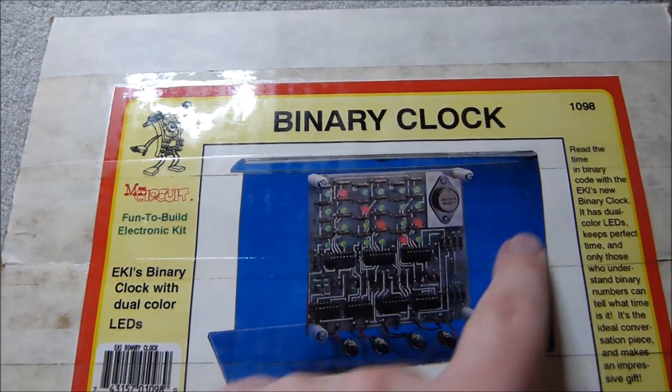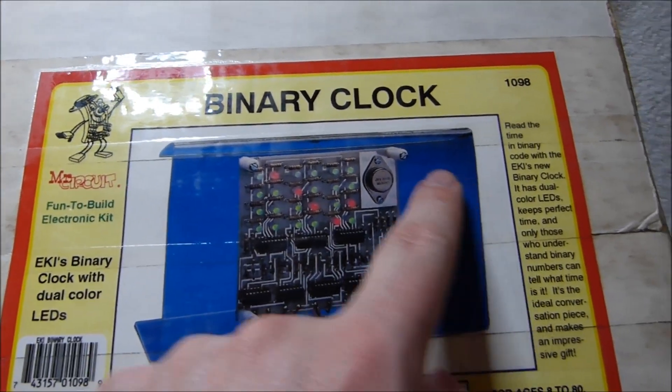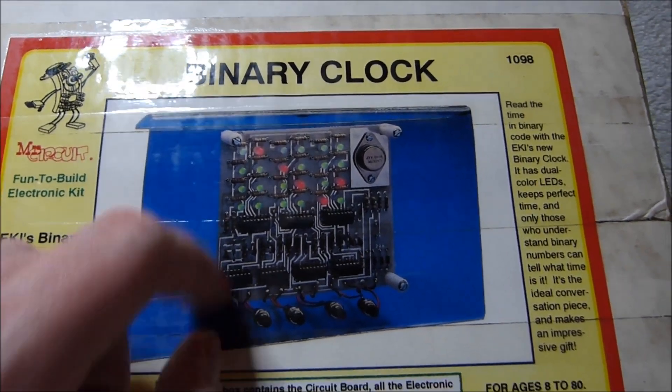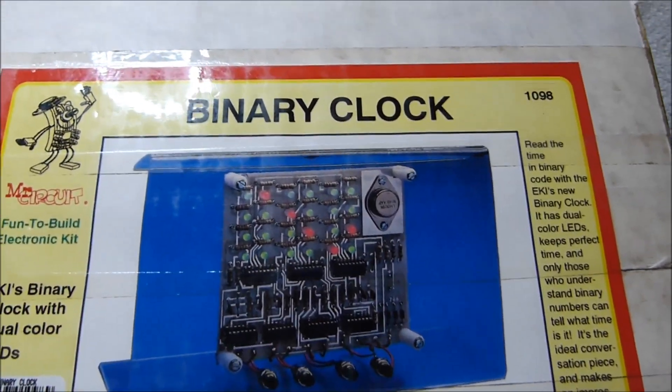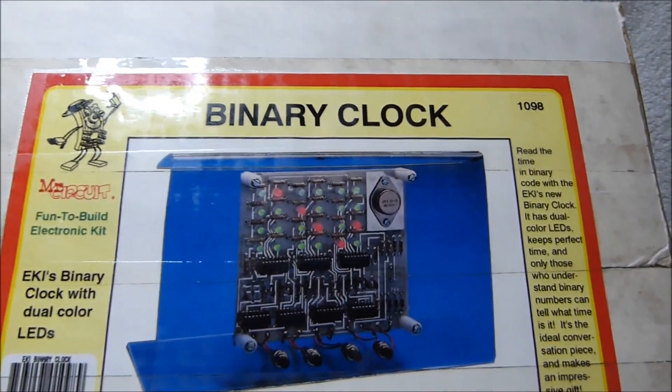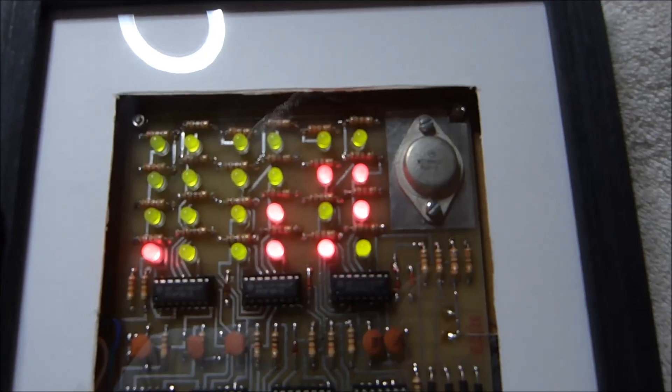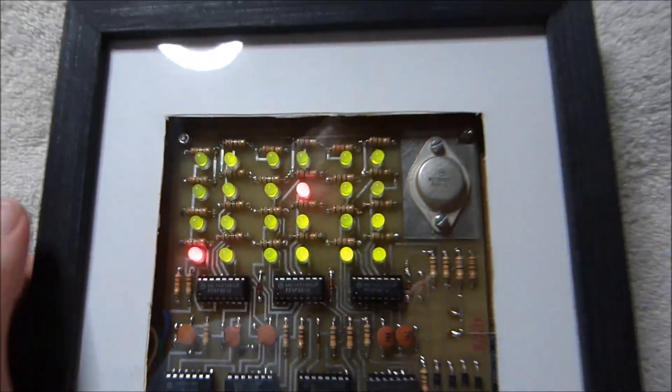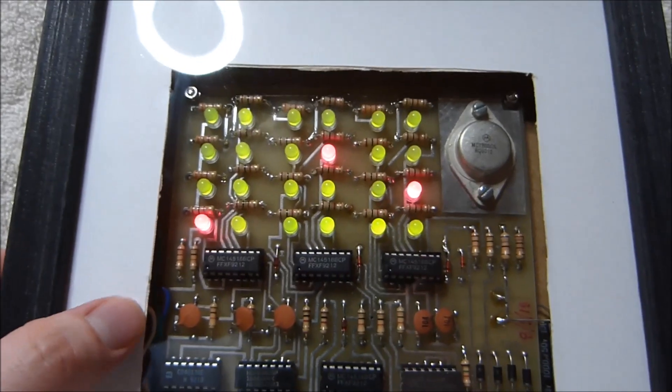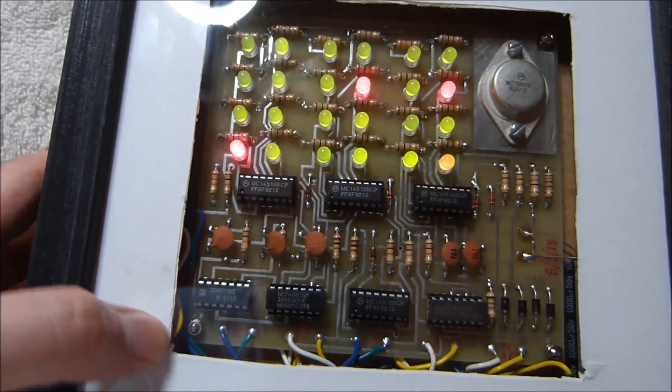As you can see the box also shows this snazzy blue plexiglass stand for the clock, as well as some mounting hardware to attach it to that. None of that was included either. I ended up buying a picture frame from a craft store and fitting it in there. And yes I know I did a terrible job cutting the matting.